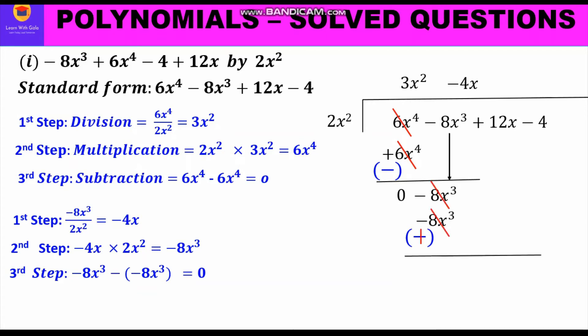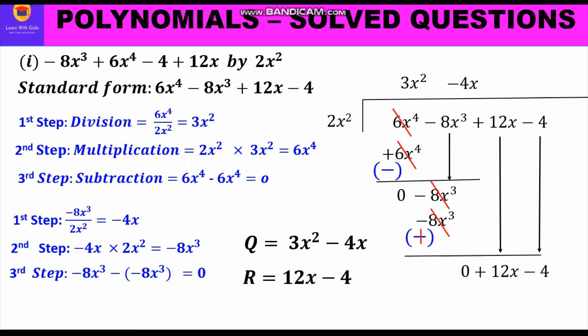We bring down the next term, 12x. The power of x here is 1, which is less than the power of x in the divisor, which is x². Whenever we get a term whose power is less than that of the divisor, we stop the division and bring down the remaining terms. So 12x minus 4 is our remainder, and the quotient is 3x² minus 4x.